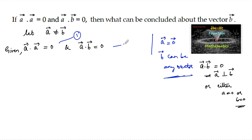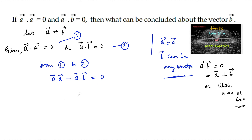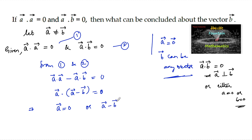Now taking equation 1 and equation 2: subtracting the two equations gives a·a minus a·b = 0. We can factor this as a·(a − b) = 0. The dot product being 0 implies either vector a = 0, or the vector (a − b) = 0, meaning a = b.